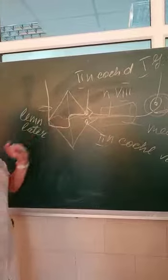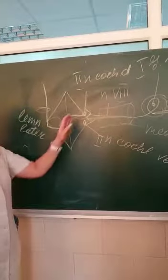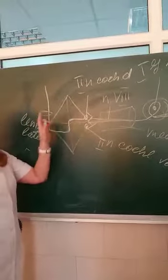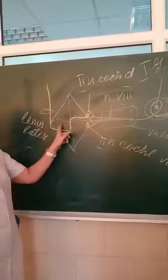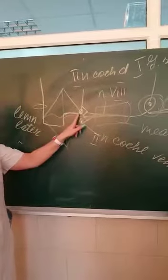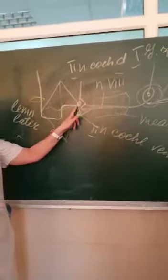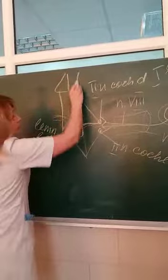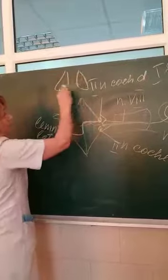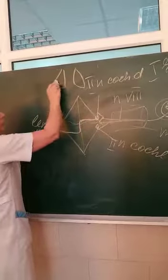The lemniscus lateralis carries the fibers of the acoustic pathway — the axons of the second neuron. These fibers run to the metathalamus of the opposite side.